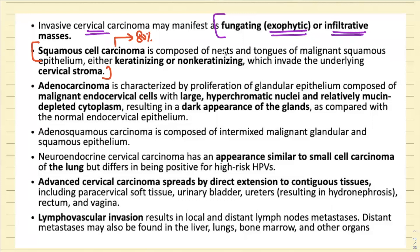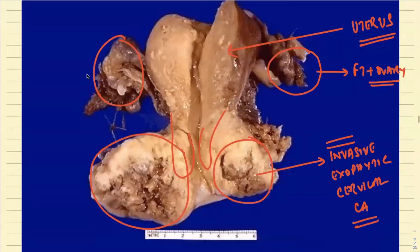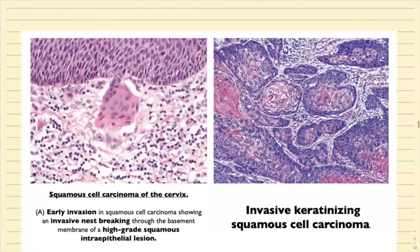Microscopically, the most common variety is squamous cell carcinoma, accounting for 80 percent. They comprise nests and tongues of malignant squamous epithelium with polygonal cells. They may or may not produce keratin — so they can be keratinizing or non-keratinizing squamous cell carcinoma. The most important feature is invasion of the cervical stroma. You can see the basement membrane — a part of the tumor has come out, demonstrating the invasion that is occurring.